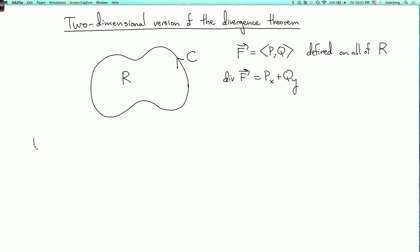And then the theorem is that the double integral over R of the divergence of F with respect to area is the integral over C. So it's not going to be F dot dr. It's something a little bit different. It's going to be F dot N dS, where N is an outward unit normal vector to C.